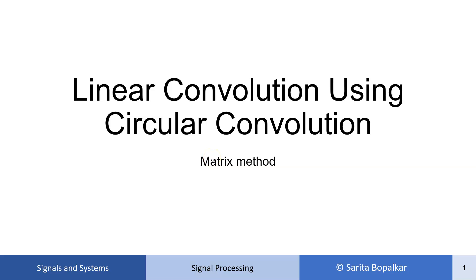Hello. In this video we are solving one example to find the linear convolution using circular convolution by matrix method. We know that linear convolution is used to find the output of a discrete time LTI system, where y[n] equals the input x[n] convolved with the impulse response h[n].